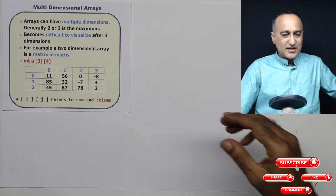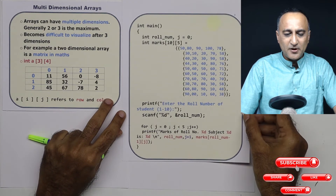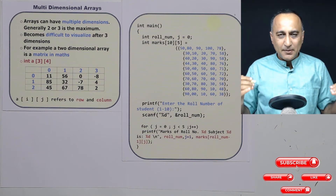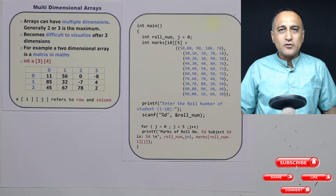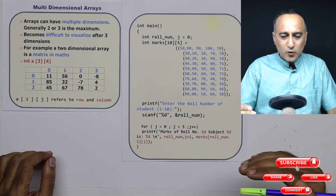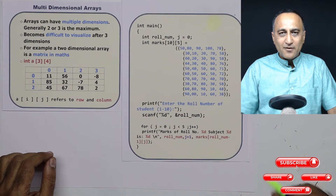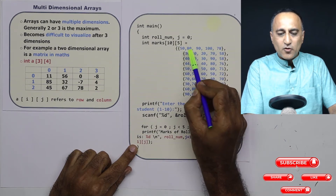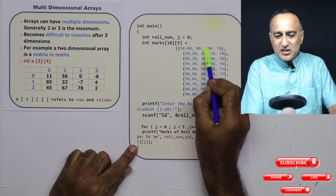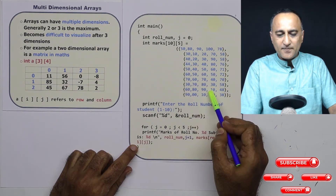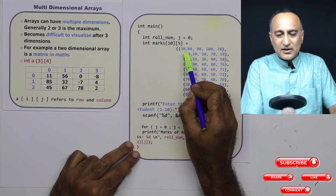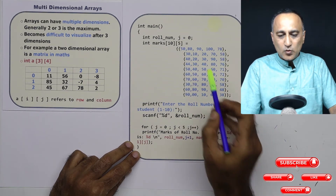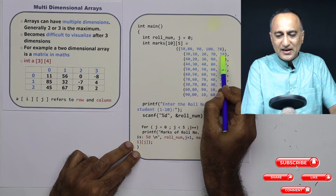A better way to understand a multi-dimensional array is a simple example where I show you how a two-dimensional array is initialized and how to print values from it. For 10 students who took an exam in five subjects, in each row I am storing the marks for each student. For example, row number one has marks 50, 80, 90, 100, and 78. Row number two has marks 30, 10, 20, 70, and 58.